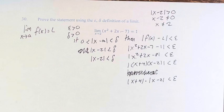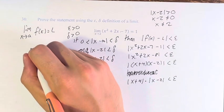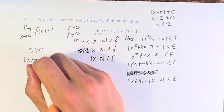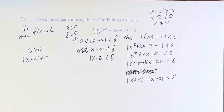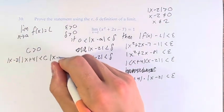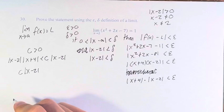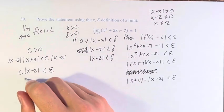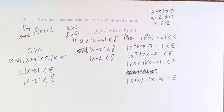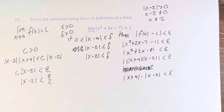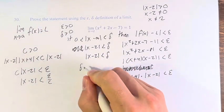So we're going to pick a value c, a positive c, such that the absolute value of x plus 4 is less than c. We pick this particular c because if we multiply both sides by the absolute value of x minus 2, we can say the absolute value of x minus 2 times x plus 4 is less than c times the absolute value of x minus 2. We can therefore say that c times the absolute value of x minus 2 is less than epsilon, by saying the absolute value of x minus 2 is less than epsilon over c. So delta equals epsilon over c.